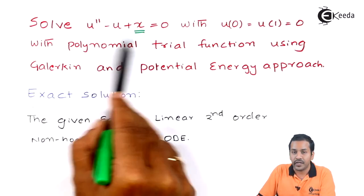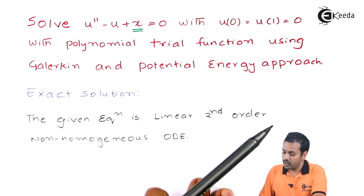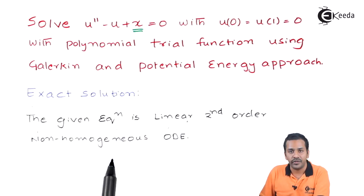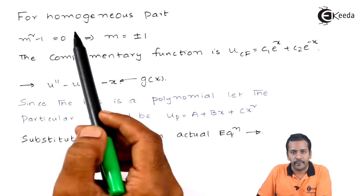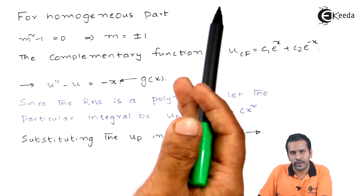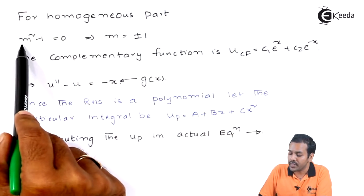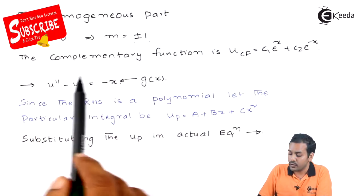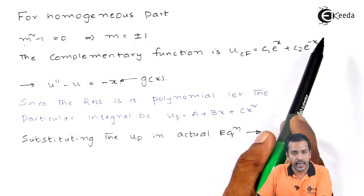What is the exact solution for this differential equation? We have u double prime minus u plus x equals 0. This is a linear second order non-homogeneous ordinary differential equation. To solve it, there will be a complementary function and a particular integral. For the homogeneous part, we take m squared minus 1 equals 0, giving roots of plus or minus 1. So the complementary function is c1 e^x plus c2 e^(-x).